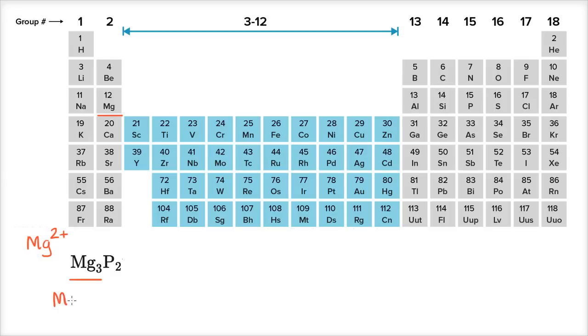So if we want to see what is going on in this compound, we could write it like this, which isn't what you would typically see, but this is just to see what the constituent ions of this compound actually are. Now the cation tends to be written first, so that's the magnesium, and the anion tends to be written second. And that is the phosphorus here, if we follow the convention.